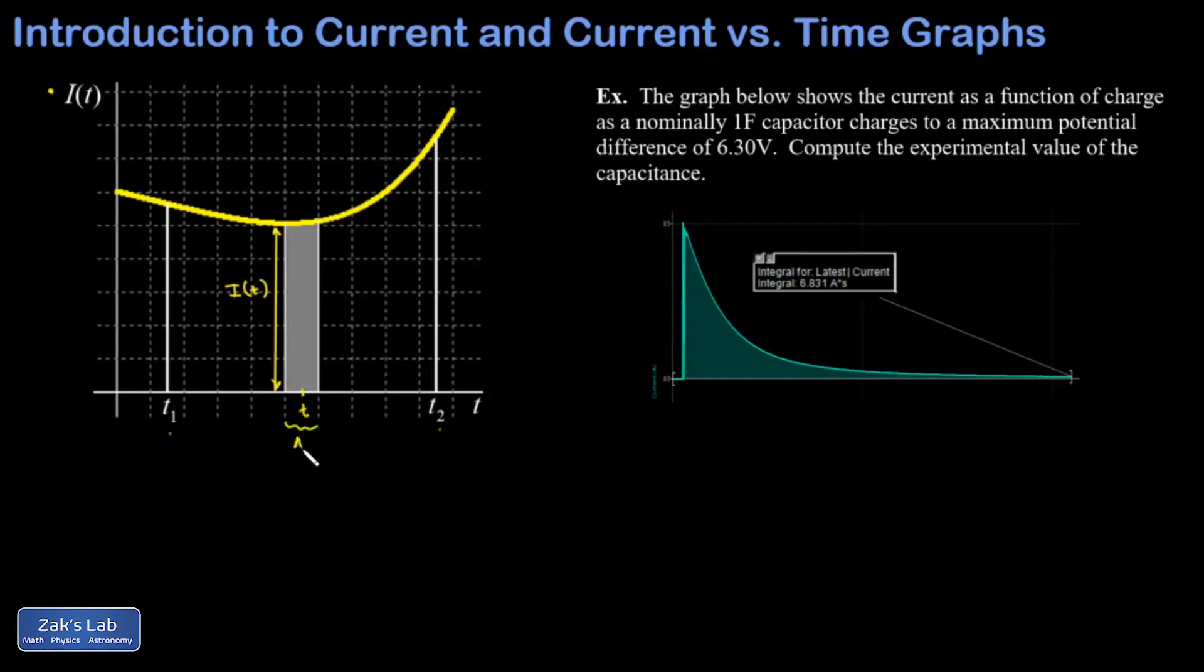The rectangle area then is I of T times delta T. And I recognize this from our previous example. If I take I and I multiply by delta T, it gives me the amount of charge that's flowed during that amount of time.